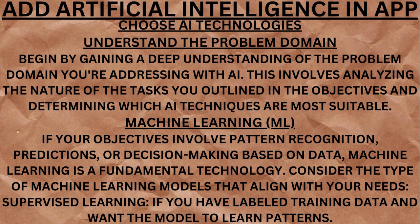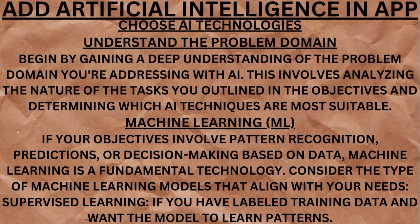Choose AI technologies. Understand the problem domain. Begin by gaining a deep understanding of the problem domain you are addressing with AI. This involves analyzing the nature of the tasks you outlined in the objectives and determining which AI techniques are most suitable. Machine Learning. If your objectives involve pattern recognition, predictions, or decision-making based on data, machine learning is a fundamental technology.